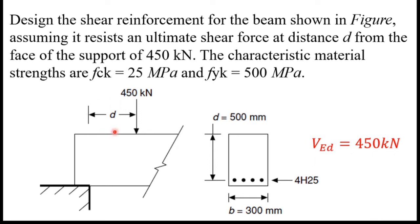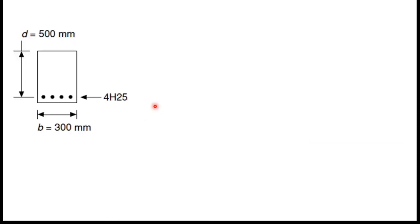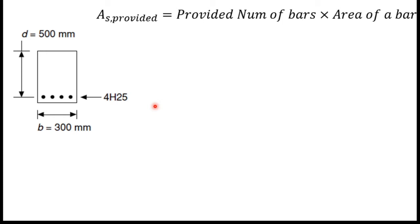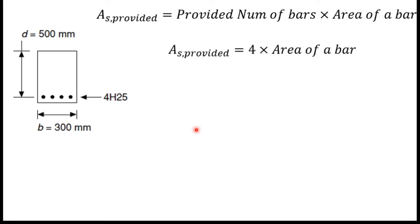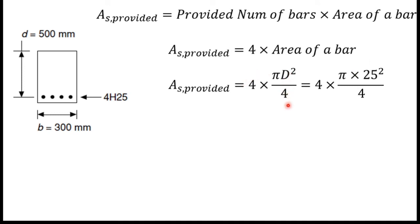So VEd equals 450 kilonewtons — the shear force at distance d from the support. First, we need to find As_provided, the provided steel area, which we'll need for future calculations. As_provided equals the number of bars times the area per bar. There are four bars provided, and the area per bar equals πd²/4. With diameter 25mm, As_provided equals 1964 mm².